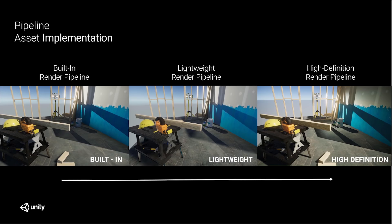But what if you wanted to put assets into the pipeline that were created before the introduction of the pipelines — in other words, created with the intention of using the legacy pipeline, such as asset store assets? Well, this requires upgrading, and that's one of the things I'm going to show today. The asset upgrading follows exactly the same workflow whether you implement the render pipeline through Unity Hub or the package manager.